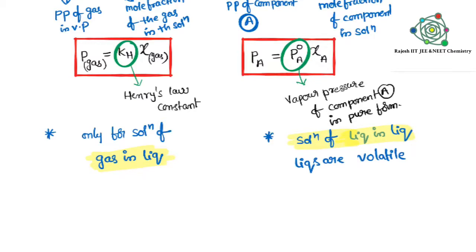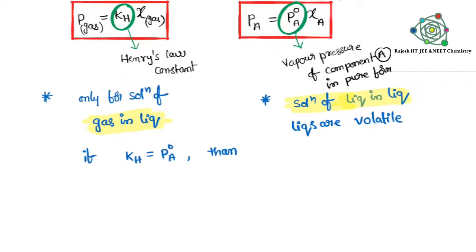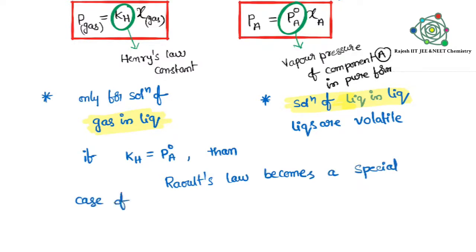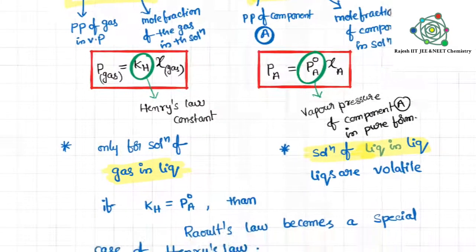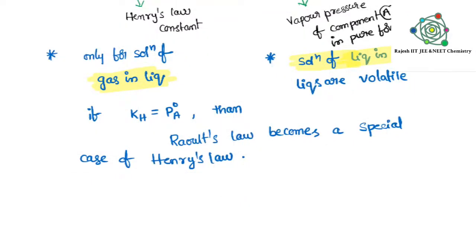Now looking at the formulas, all terms are similar: partial pressure of the gas in vapor phase, and mole fraction — all are the same. The only difference is KH versus P°A. If KH and P°A are equal, then Raoult's law also becomes a special case of Henry's law. So whenever these two constants are equal, Raoult's law can be considered a special case of Henry's law.